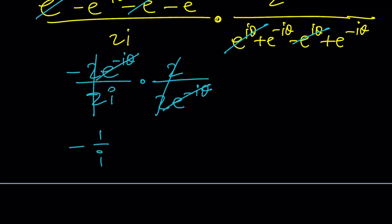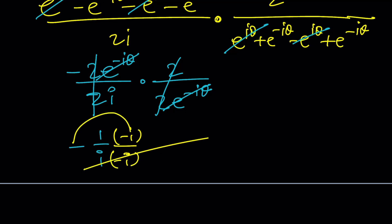If you multiply negative one over i by negative i over negative i, the denominator becomes negative i squared which is one, and the negatives cancel, giving you i. And that's the happy ending.